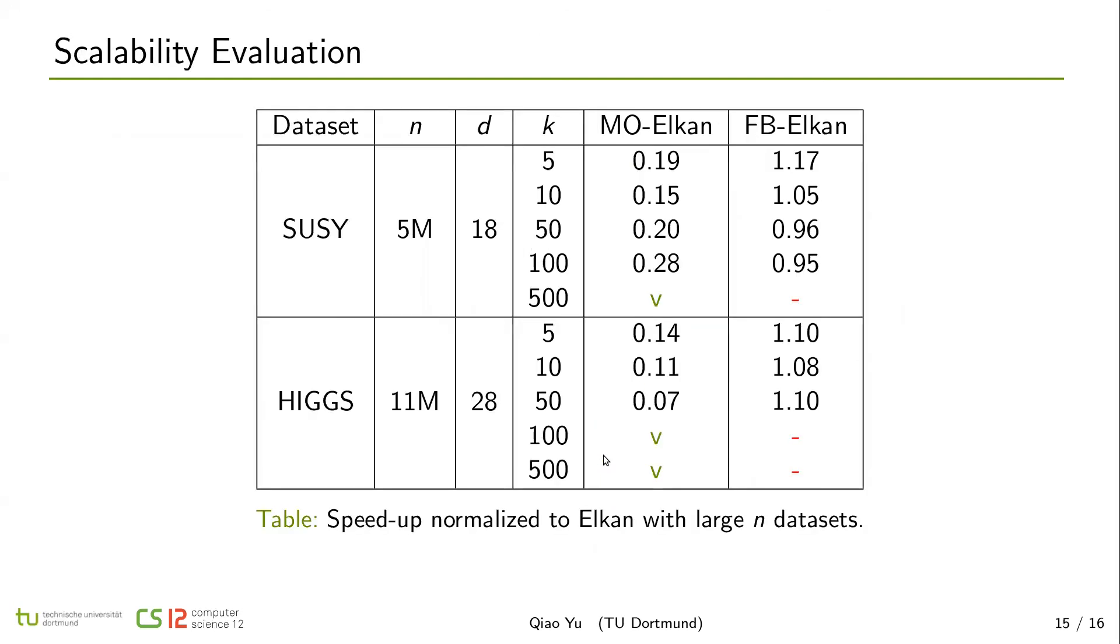We also evaluate the scalability of the proposed methods to see if we mitigate the shortcoming of Elkan's k-means on large datasets. In the results, MO-Elkan was still working in both datasets. However, Elkan k-means and our FB-Elkan just ran out of memory when k is equal to 500 in Susy datasets and k are 100 and 500 in Higgs datasets.